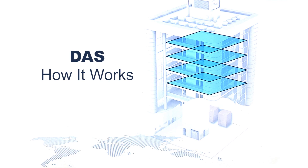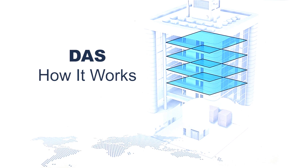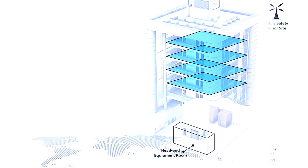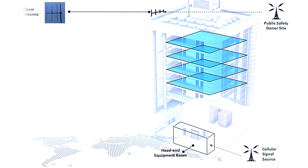The main components of a DAS system usually entail a source. The source is either a base station, or BTS, or a bidirectional amplifier, otherwise known as a repeater. If a repeater system, a donor antenna is required. The donor antenna is typically placed on a rooftop or somewhere where it can be oriented to pull the signal from the closest macro site.